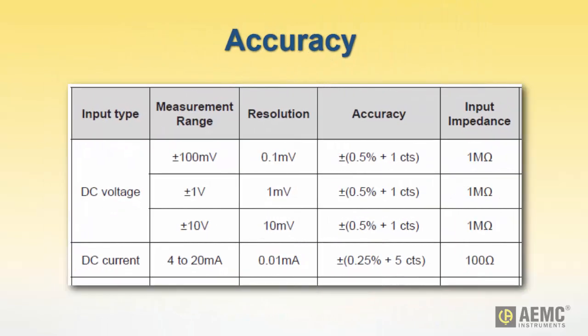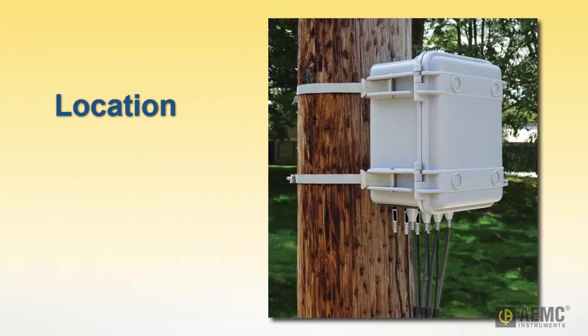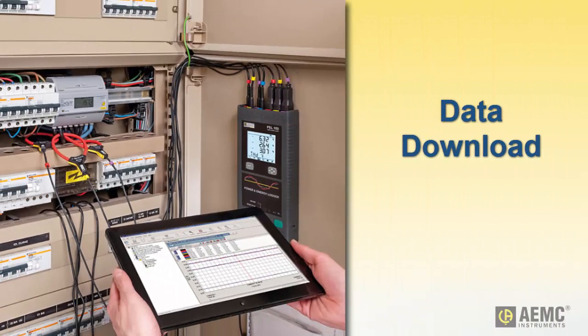Accuracy specifications vary widely among different types of data loggers. Understanding how accurate your measurements must be can help avoid paying for a high-precision instrument you may not need. Consider whether your location requires a data logger designed specifically for that environment, or whether a more general-purpose instrument will suffice. Downloading may consist of simply removing the instrument's memory card and inserting it into a computer. In environments where this may be difficult, consider an instrument that can communicate directly to the computer through USB cable, Bluetooth, or Wi-Fi.